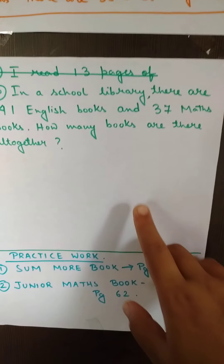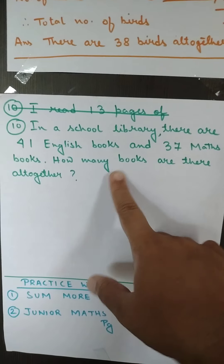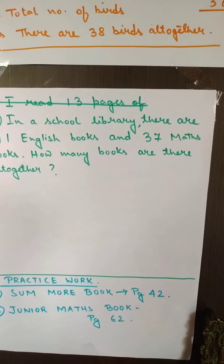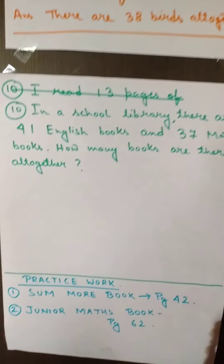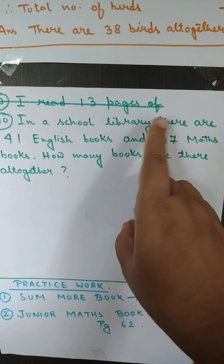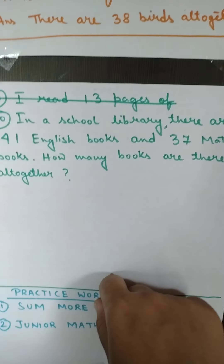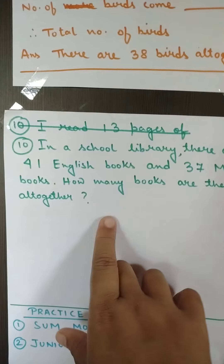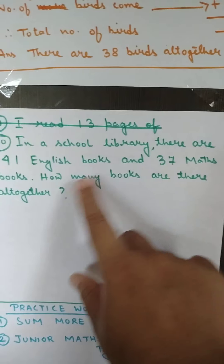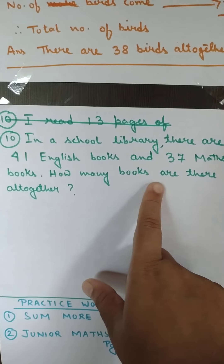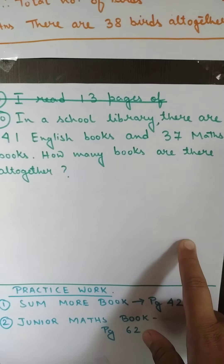Number ten: In a school library there are 41 story books. You know what a library is — in your school there is a big library with many different subject books. In a school library there are 41 English books and 37 maths books. How many books are there altogether? Number of English books is 41, number of maths books is 37. Therefore, total number of books is 41 plus 37. Understood?